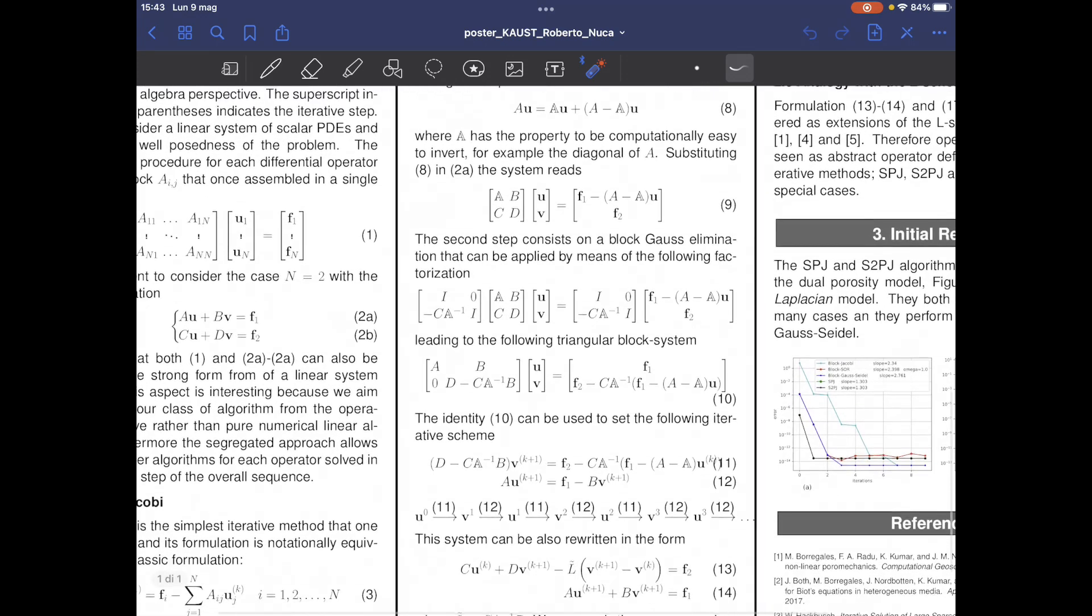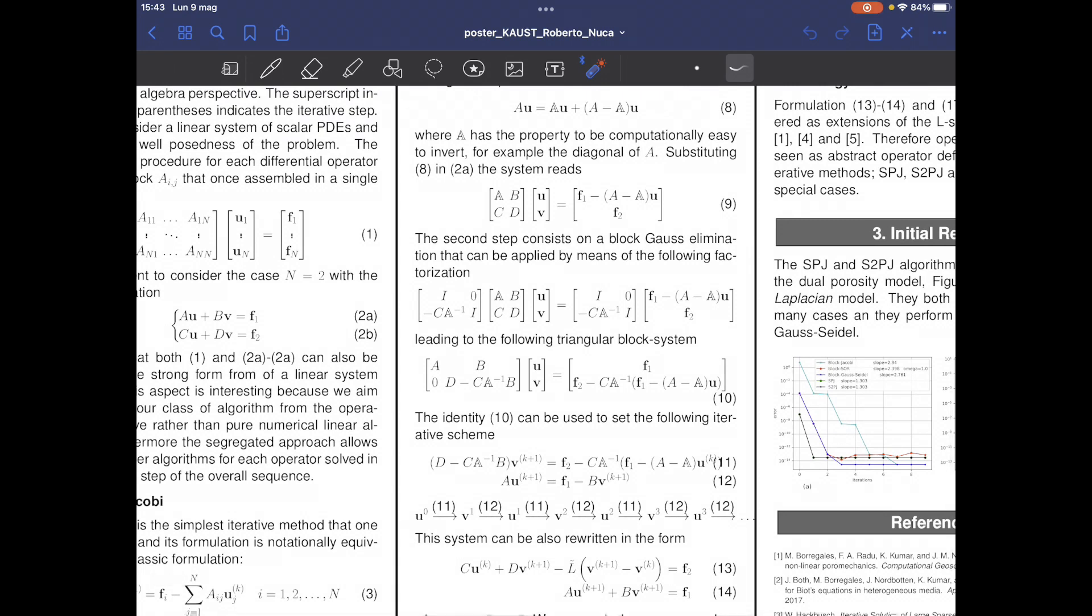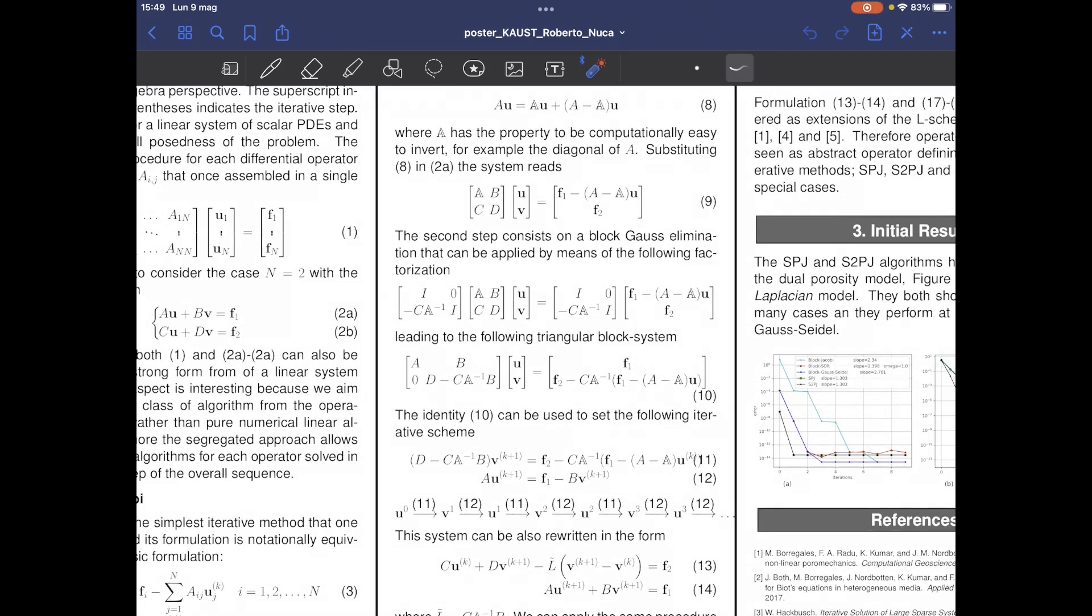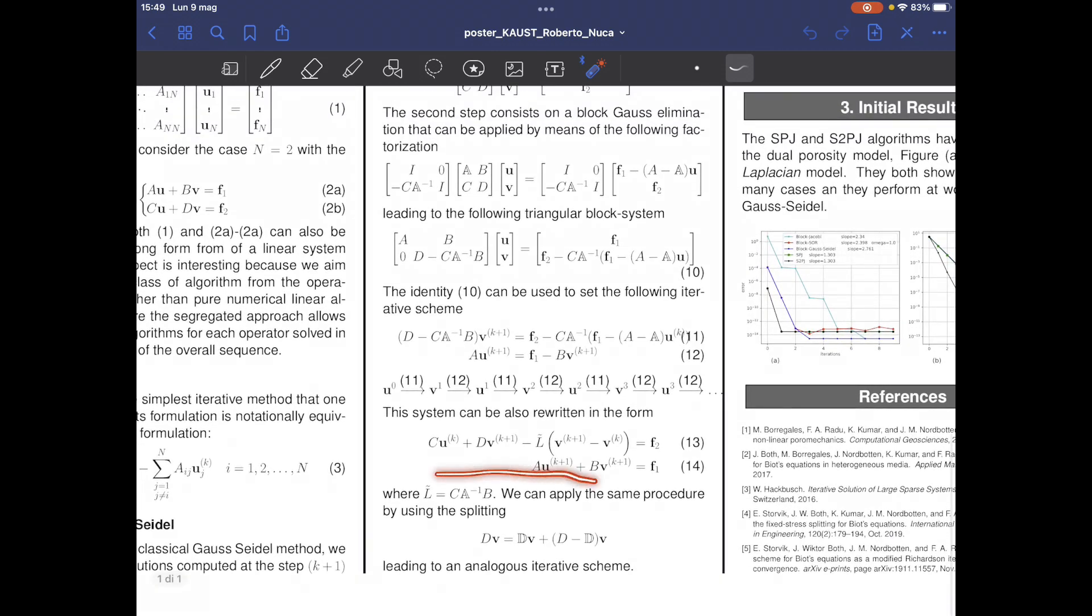The second step in the model consists on applying a block Gaussian elimination to the equation number 9. Using this factorization, we can get the identity number 10, which is used to set the iterative method described in equation number 11 and 12. Equation 11 and 12 can be rewritten in a form which is more suitable to be compared with classical block methods, as we can see in equation 13 and 14. And we can also notice that if the L operator is equal to 0, we recover the classical formulation of block Gauss-Seidel for the case n equals 2.